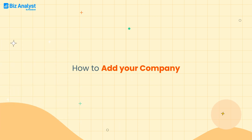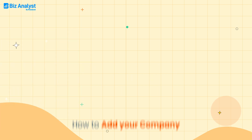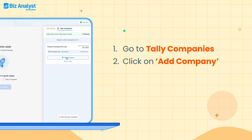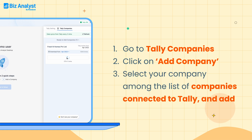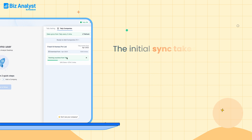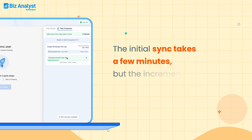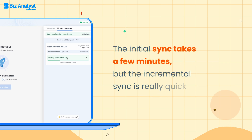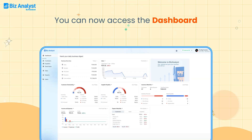Let's see how to add your company. Click on Add Company under the Tally Companies section, select your company from the list of companies connected to Tally, and click Add. The initial sync takes a few minutes, but the incremental sync is really quick. You can now access the dashboard.